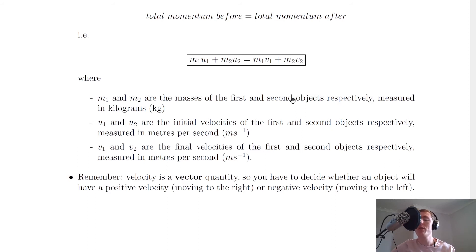First of all, we've got a left-hand side equals a right-hand side. The left-hand side is before the interaction or collision, and the right-hand side is after the interaction or collision. What do the individual symbols mean? Well, m₁ and m₂ are the masses of the first and second objects respectively, measured in kilograms.